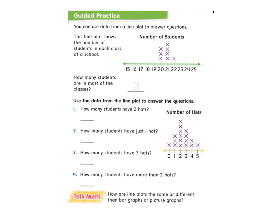It's very important when you're analyzing, when you're looking closely at a line plot — same with a bar graph, same with a picture graph, same with a tally chart — that you know what each of these pieces of data represents. That's where this information comes in handy. It shows the number of students in each class at a school. These down here are the number of students, and each of these is one class.